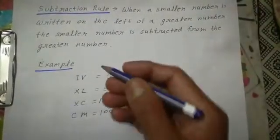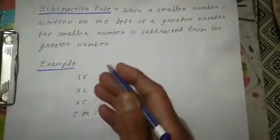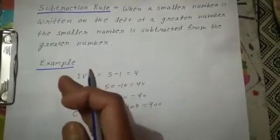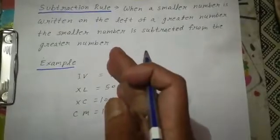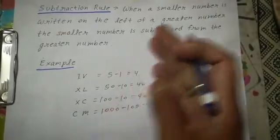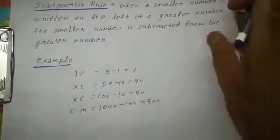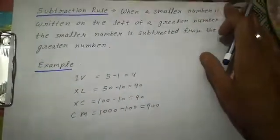So when you are writing a smaller symbol to the left of the greater symbol, you are subtracting.